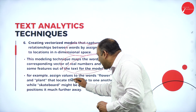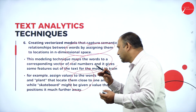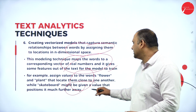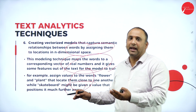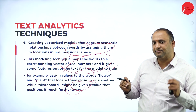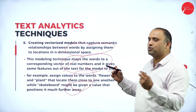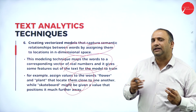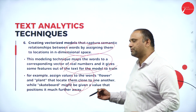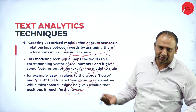For example, assign values to words like 'flower' and 'plant' and locate them close to one another, while 'skateboard' might be given a value positioned much farther away. Whenever we relate terms like flower, plant, tree, and leaves, they are close to one another because we try to relate and locate them. Whereas 'skateboard' is positioned much farther away because it is not a related word.